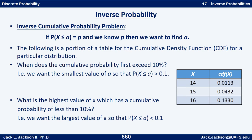Here's the question: when does the cumulative probability first exceed 10 percent? We want the smallest value of A such that the probability that X is less than or equal to A is greater than 10 percent. If you look at the table, the first time the cumulative probability goes over 10 percent is at X = 16, so the A value we're looking for is 16. At X = 15 we're below 10 percent; at X = 16 we're above 10 percent.